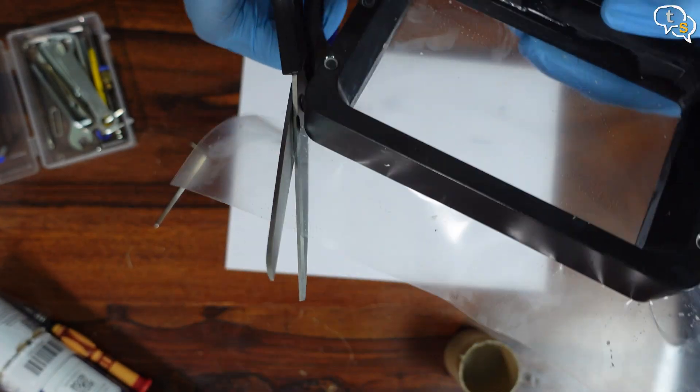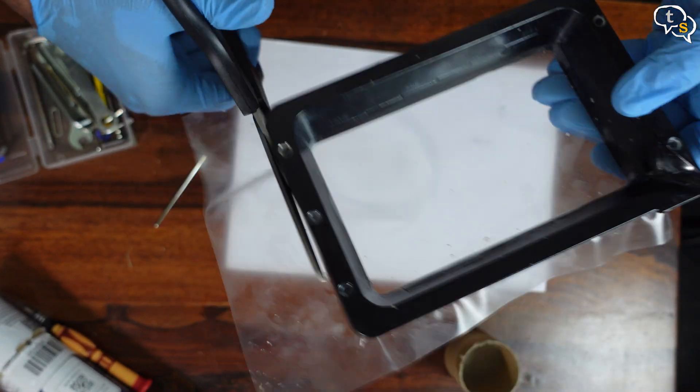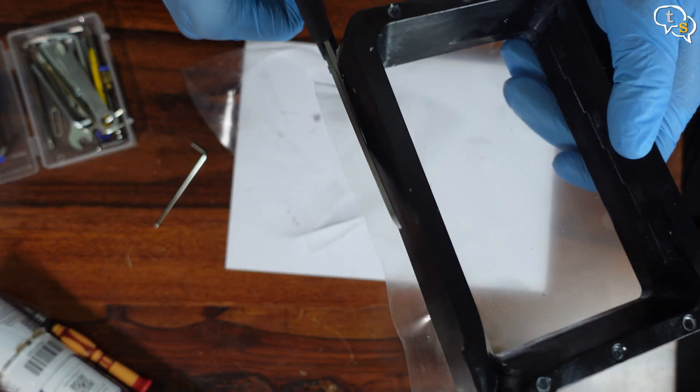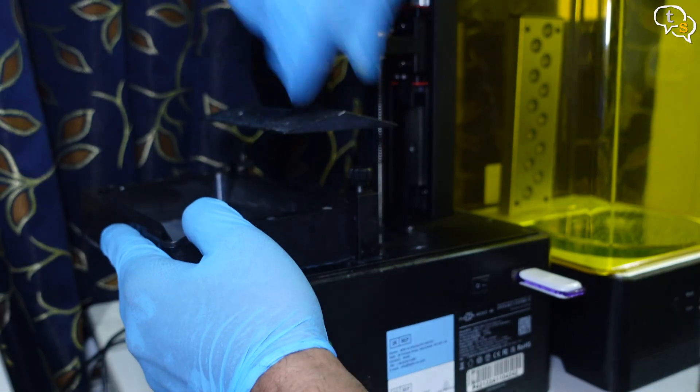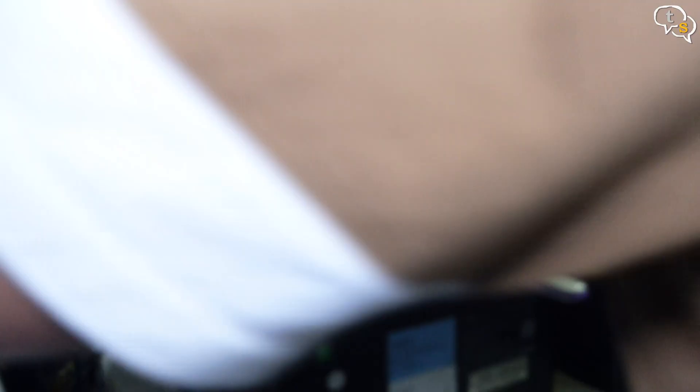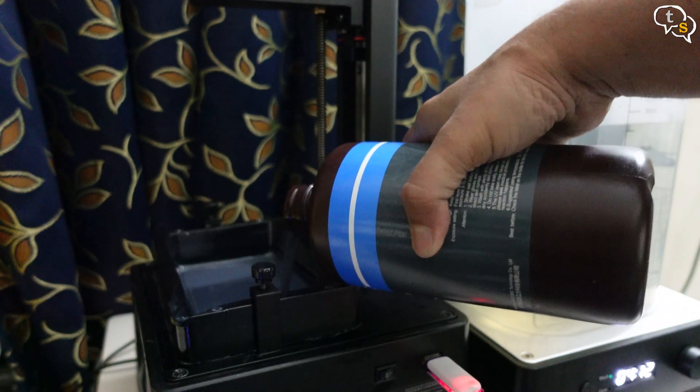Now trim off the extra film with a utility knife. I'm using the scissors here, reinstall your vat, pour in your resin. Now you're good to go.